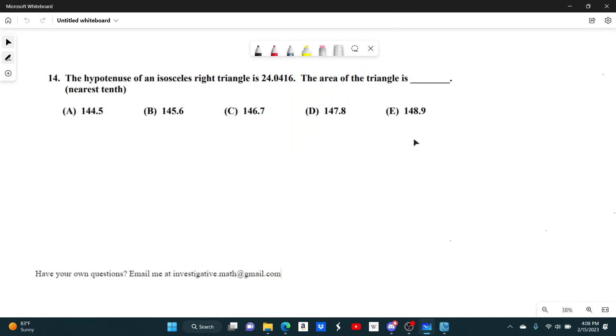Number 14. The hypotenuse of an isosceles right triangle is 24.0416. The area of the triangle is what?